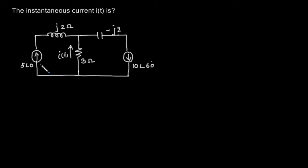In the circuit we have two current sources. We are asked to find out what is the value of this instantaneous current I(t). Now we have one current source 5 angle 0 and another current source 10 angle 60.